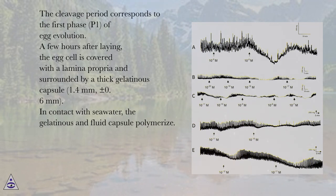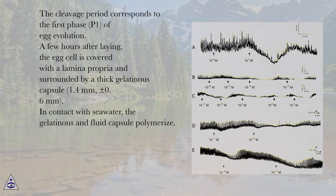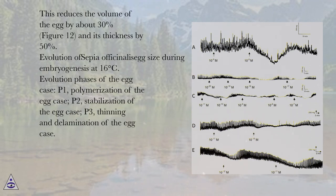A few hours after laying, the egg cell is covered with a lamina propria and surrounded by a thick gelatinous capsule, 1.4 mm ± 0.6 mm. In contact with seawater, the gelatinous and fluid capsule polymerizes. This reduces the volume of the egg by about 30%, figure 12, and its thickness by 50%. Evolution of Sepia officinalis egg size during embryogenesis at 16 degrees Celsius.